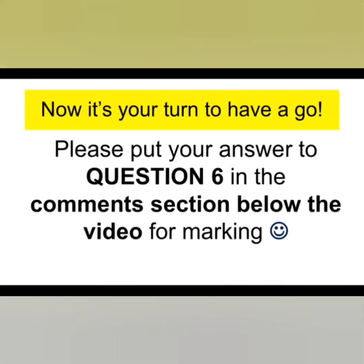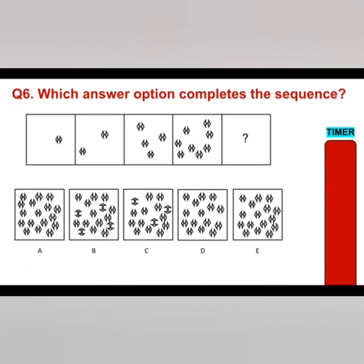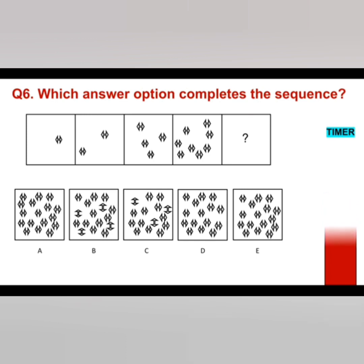Now it's your turn to have another go. Please put your answer to question six in the comments section below the video for marking. I've given you a little bit longer here because I think it's a little bit tougher — 20 seconds to answer this question. Which answer option completes the sequence from A, B, C, D, or E? Here's the timer. Hopefully you managed to see what's going on with the sequence and how it's developing.